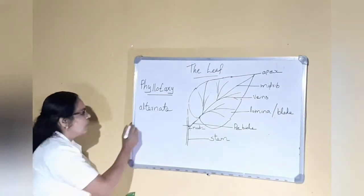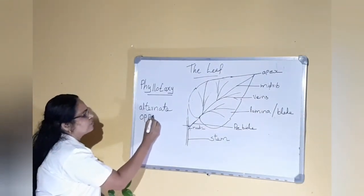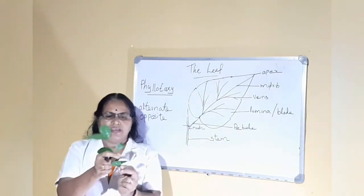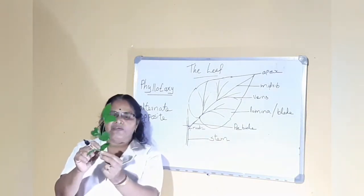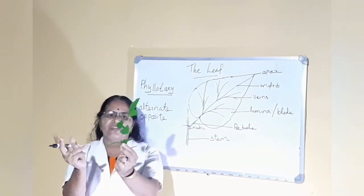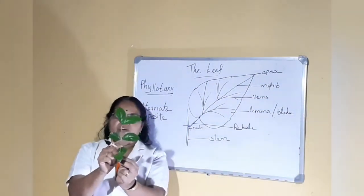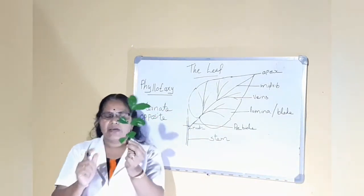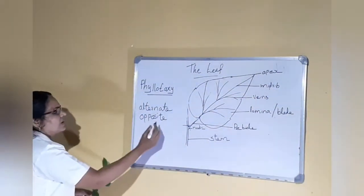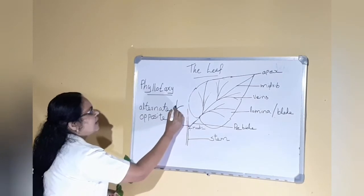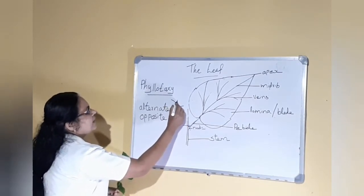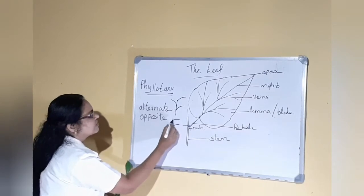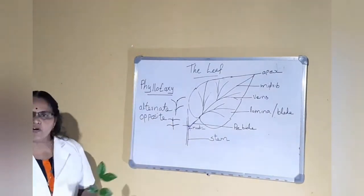Another type of arrangement is called opposite phyllotaxy. In opposite phyllotaxy, as seen in jasmine, two leaves arise from a single node — one to this side and one to this side. That is, from a node, one leaf to one side and one leaf to the other side. This type of arrangement is called opposite phyllotaxy.